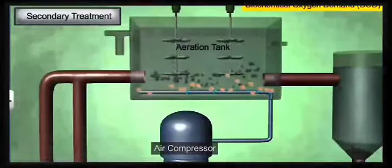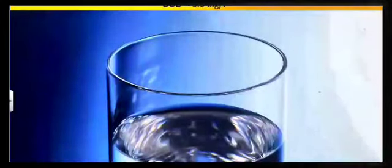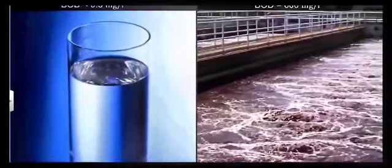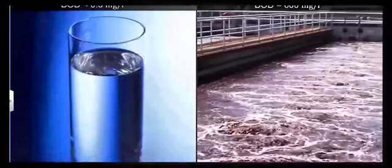We can say higher the BOD, more polluted is the water. If we compare the BOD of clean drinking water, it should be less than 0.5 milligrams per liter. But do you know what is the BOD of this sewage water? It is more than 600 milligrams per liter. So BOD is an indicator of water pollution.